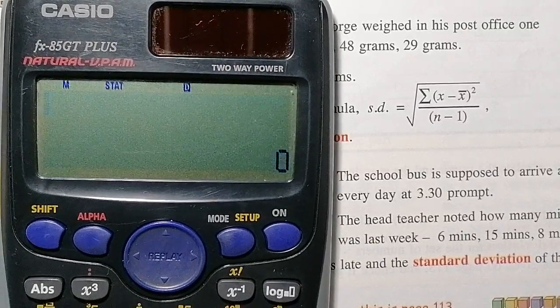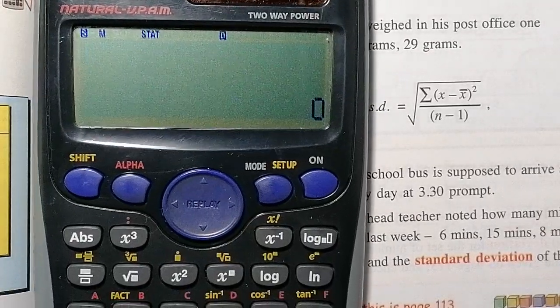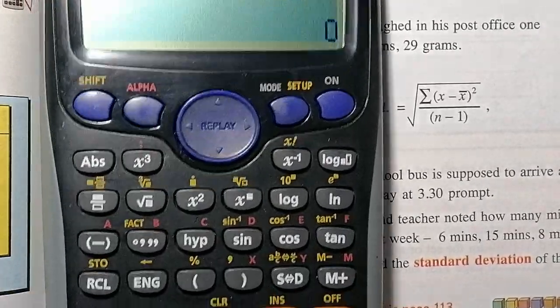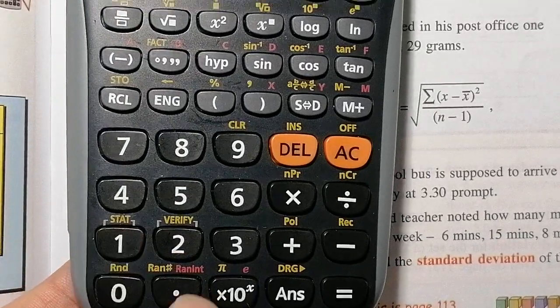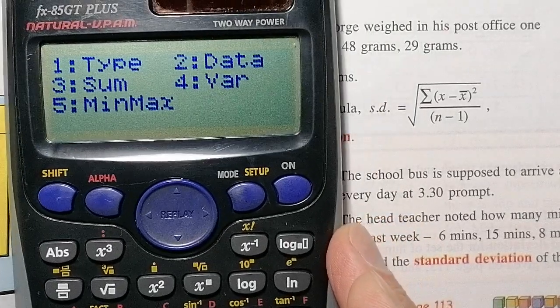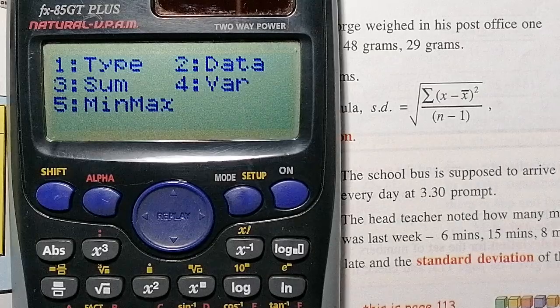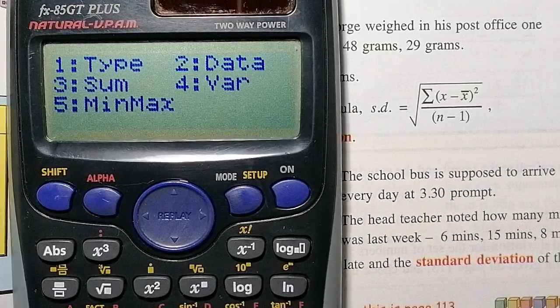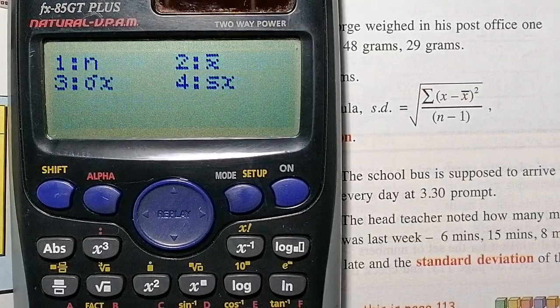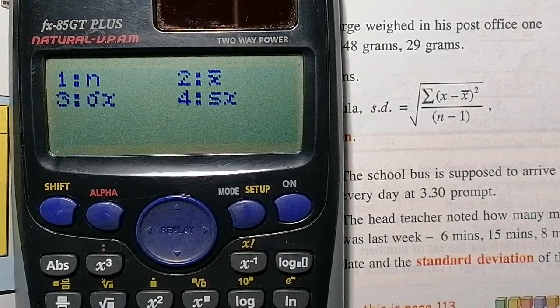So first thing I'm going to do is press the shift button, then I'm going to press the button number one where it says the gold stat down there. So number one. So on my calculator, I've got these options that are here. So the option that we're going to use is option four. We could use the others as well, but we're just going to use option four at the moment.